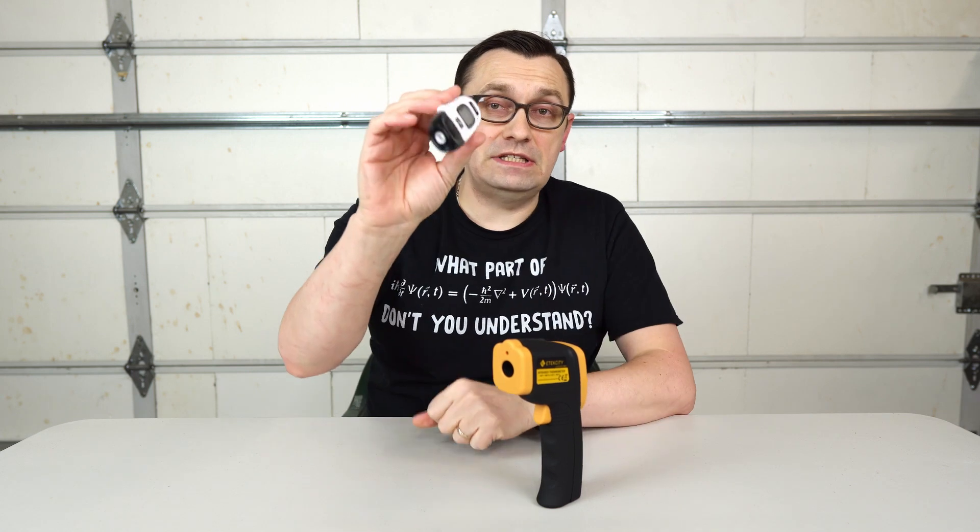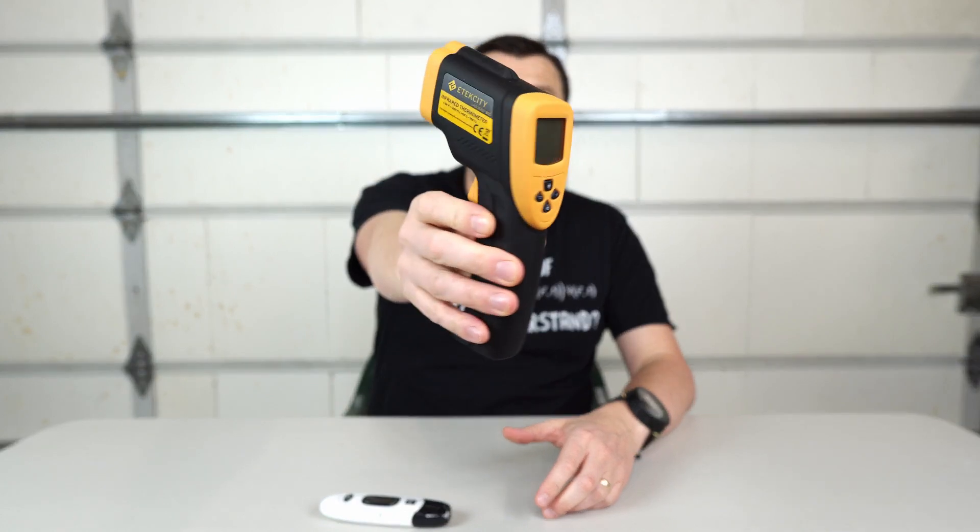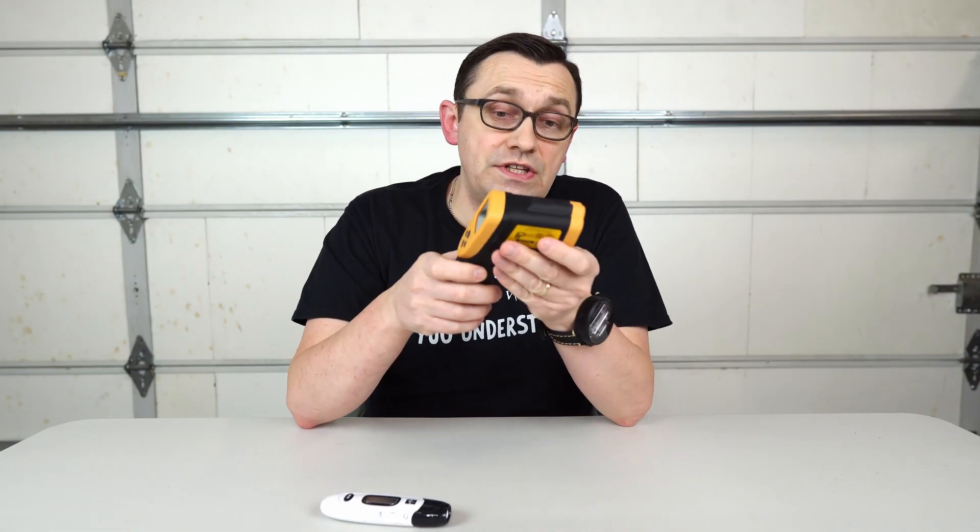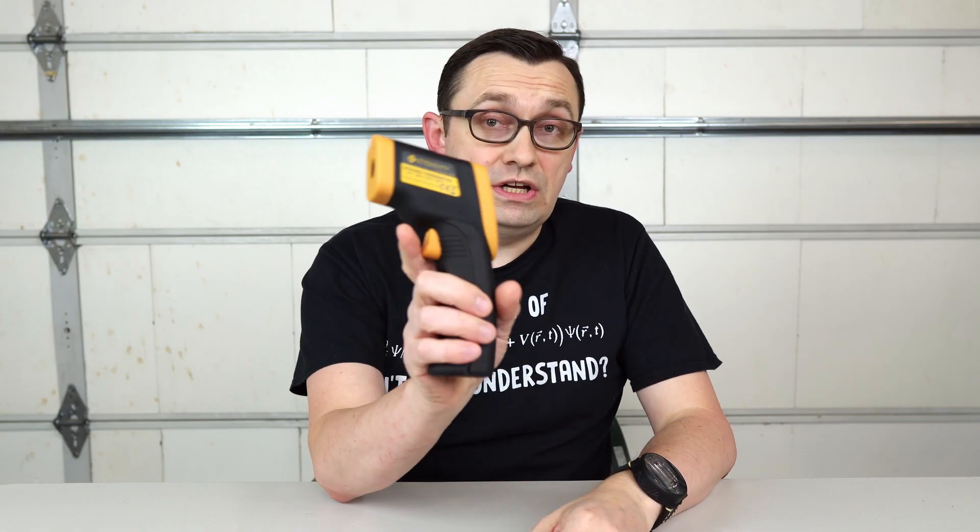This thermometer is obviously designed just to check body temperatures for babies and adults. And this one is actually a multi-purpose thermometer. It has a huge range of temperature degrees that you can test, things like minus 58 degrees Fahrenheit to 1382 degrees Fahrenheit. That's a huge range of temperature.